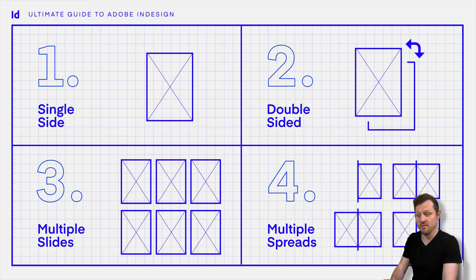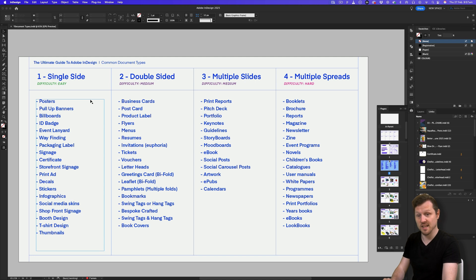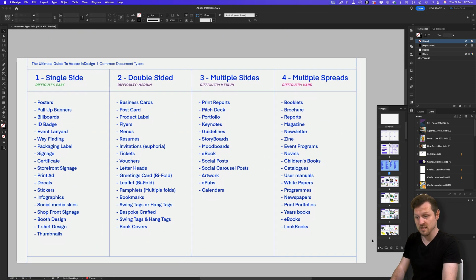Working in InDesign can be very simple or it can be very complicated. At a quick glance, you can see a difficulty level going from easy to hard. One can spend their whole design career in InDesign only scratching the surface, if they only work on single-sided, double-sided, and multiple slide documents. However, if designers work on more complicated documents with multiple spreads, they will need to be aware of how to manage pages and lots of content — and this is where it can get very complicated. So if we look at each one of these categories, we can see the types of documents that can be created.